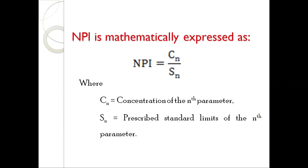The formula used for calculation of the Numerous Pollution Index is expressed as: NPI = Cn divided by Sn, where Cn in the numerator refers to the concentration of the nth parameter, whereas Sn is the prescribed standard limit of that parameter.